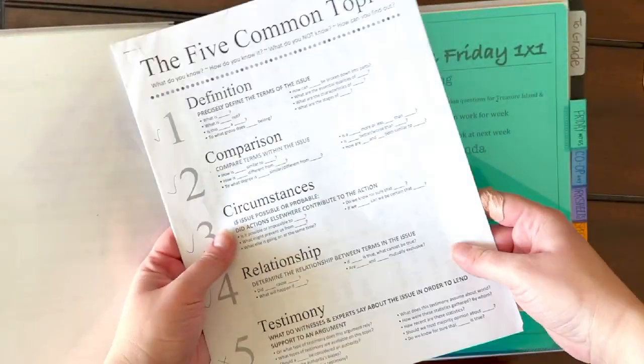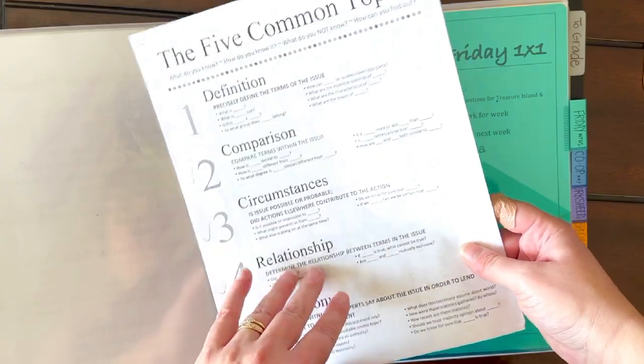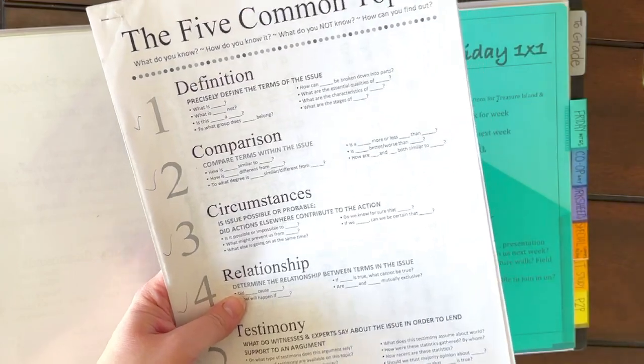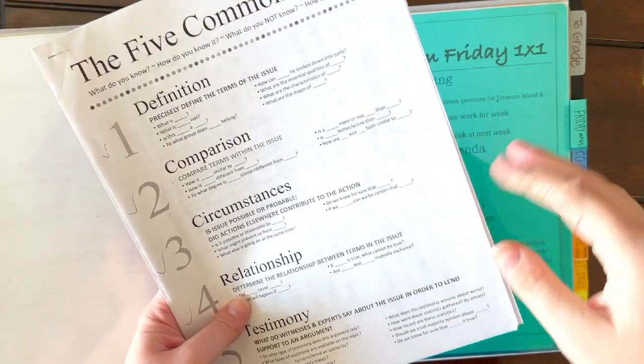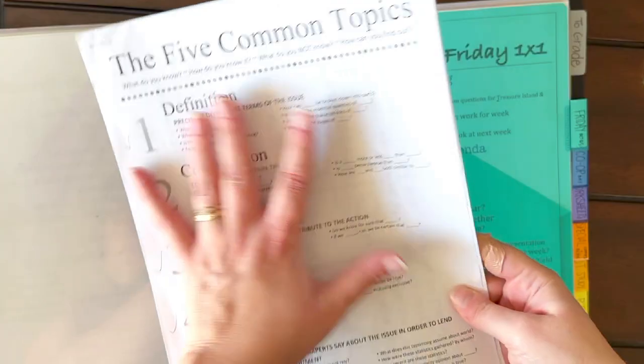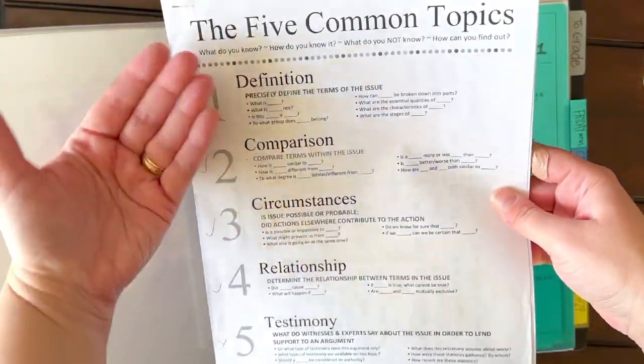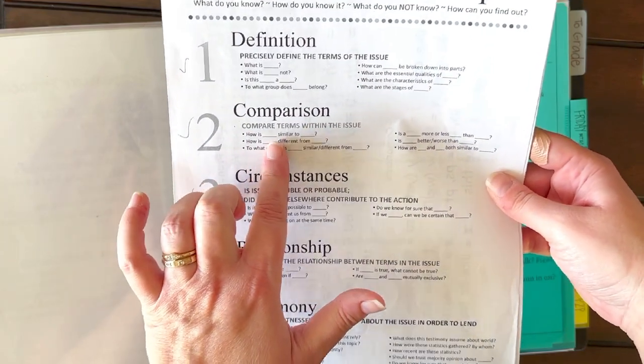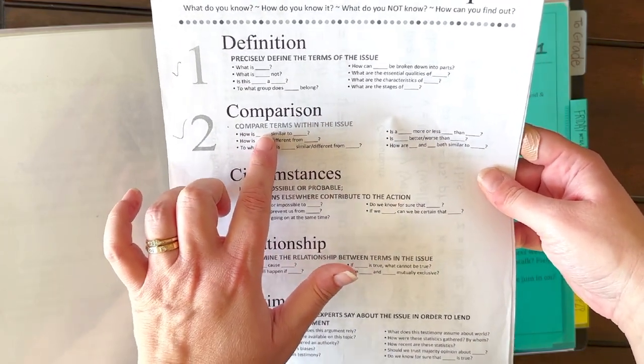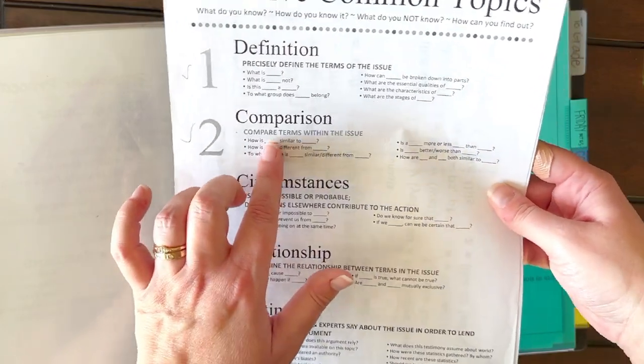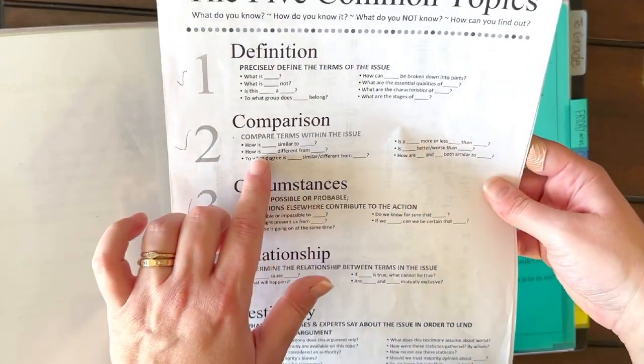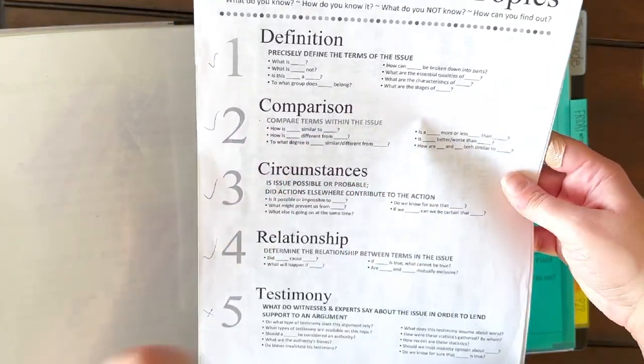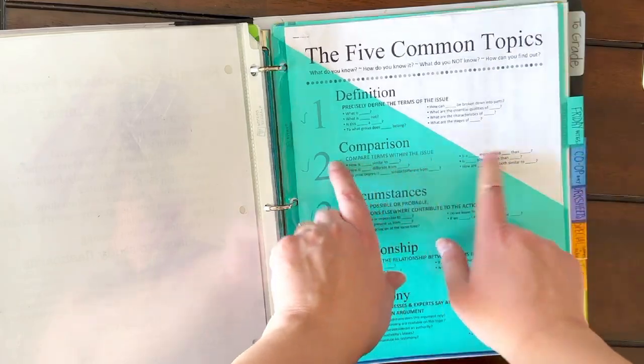And then I've got this five common topics thing. This is really a discussion guide that I got from Classical Conversations. This is very classical. This is one of the canons of rhetoric for critical thinking, for being able to discuss deeply things. So I have this in here as a reference for me as we're doing read-alouds. I can remember, okay, let's practice. How is the Vanderbeekers of 141st Street similar to where we live in our neighborhood? And how is it different? Because you know, the Vanderbeekers live in Harlem, New York. How is that different from where we live here? So this is kind of what that is here.